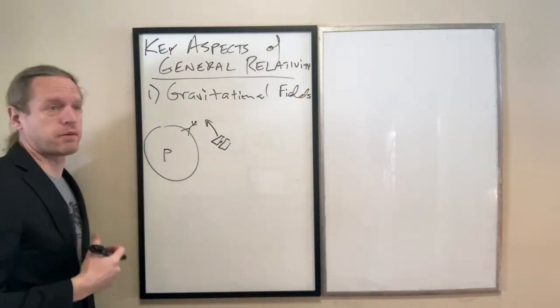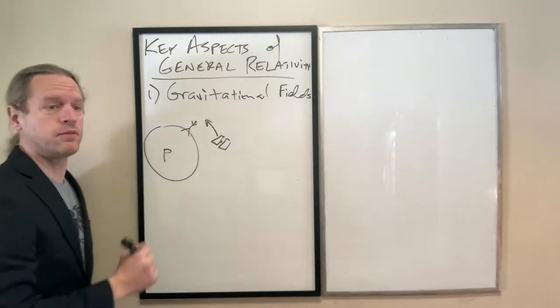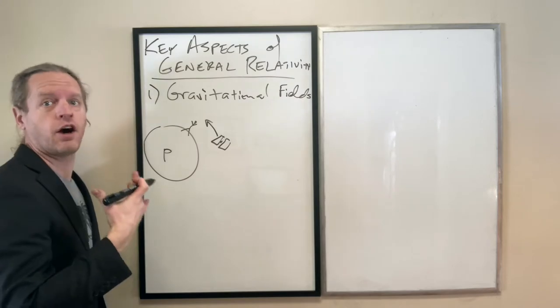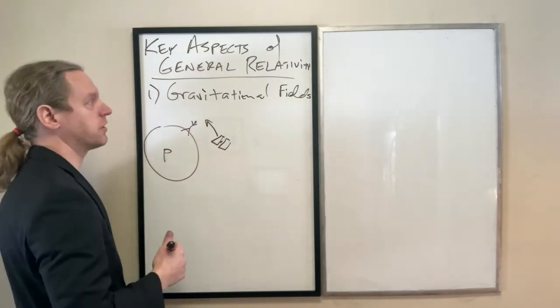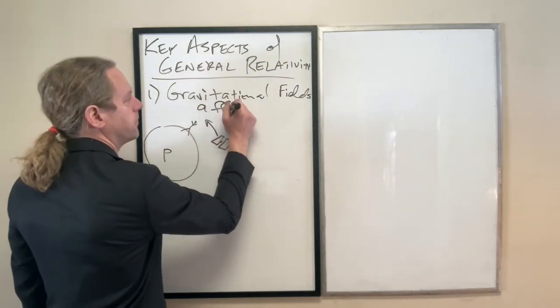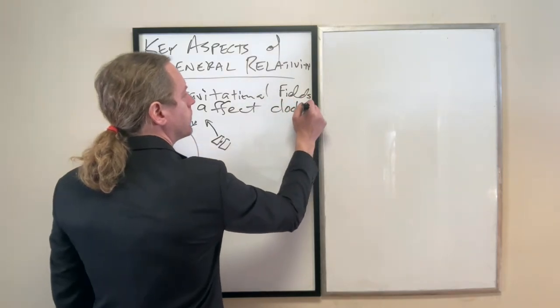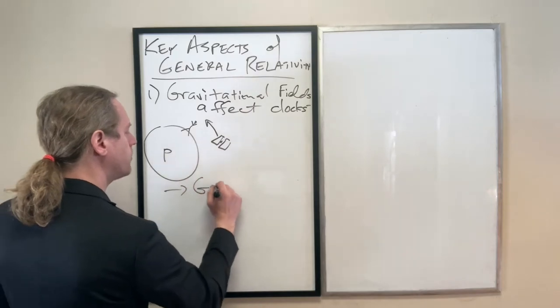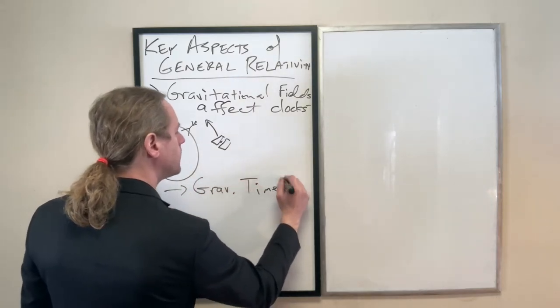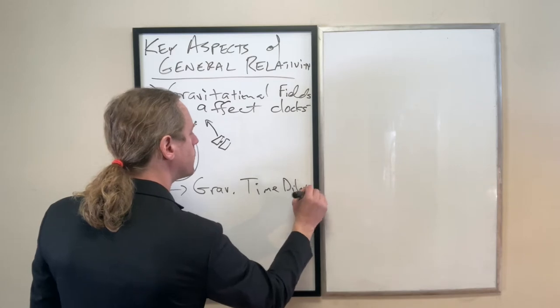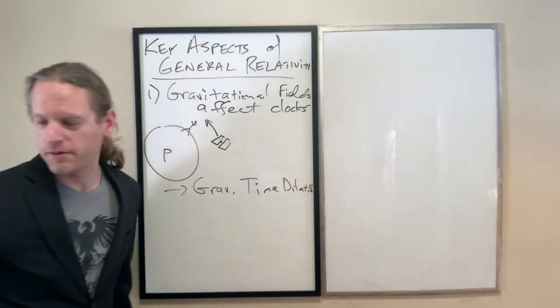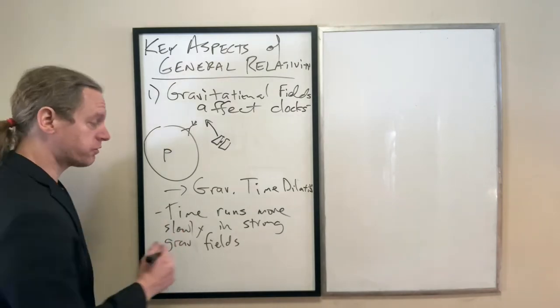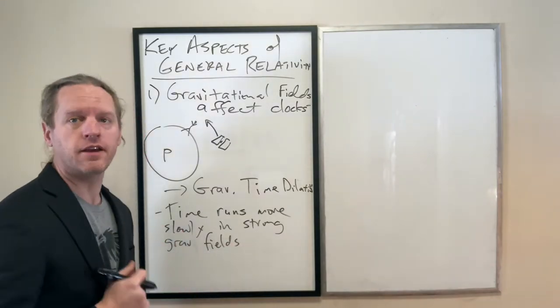So, prediction number one is that gravitational fields cause, or a stronger gravitational field, I should say, causes time to run more slowly. And specifically, we call this gravitational time dilation. And, so not only does it go more slowly in strong gravitational fields, but that's also true for highly accelerating frames.